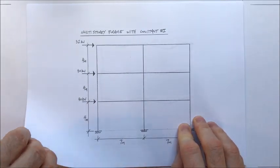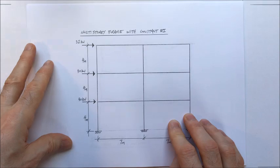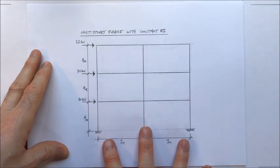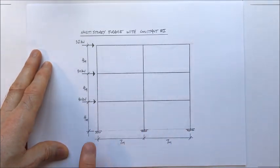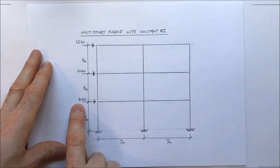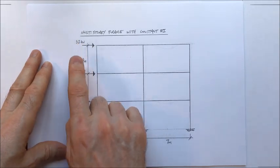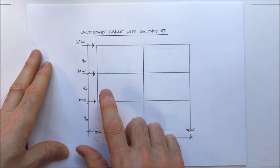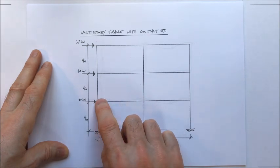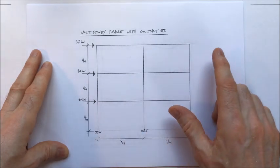I'm going to start off thinking about points of contra-flexure first. This is a three-storey structure, two bays, and there are horizontal forces of 40, 40, and 32 applied at each of the two upper floor levels and the roof. There are three supports, seven metre bays, and four metre storey heights.